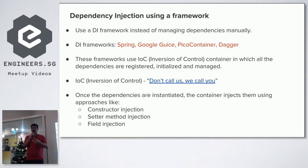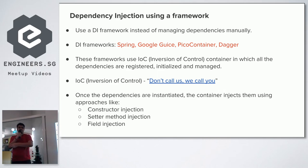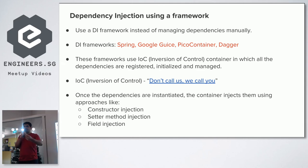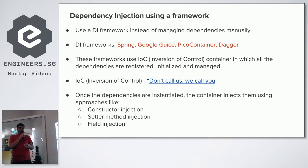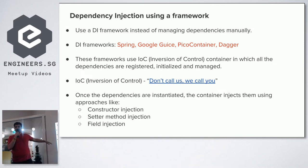Inversion of Control is a concept where a class does not bother creating its own dependency — it is handed to the class by someone else. There is the famous Hollywood Principle analogy: 'don't call us, we'll call you.' Once dependencies are instantiated, the container injects them using constructor injection, setter method injection, or field injection — dependency injection frameworks can perform injection directly at the field level.